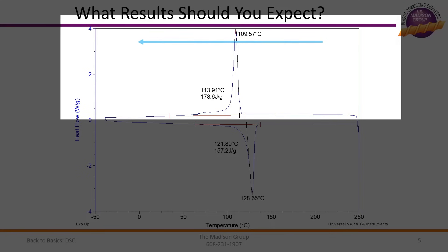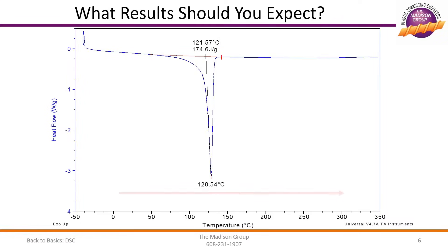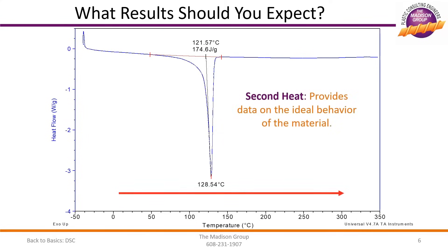The controlled cooling provides important data on how the material re-solidifies and also erases the thermal history of the material and allows the molecules to reach a near-optimal molecular orientation. The second heating curve, like the first, is read from left to right and is typically graphed on its own. This cycle provides information on the ideal behavior of the material when subjected to heat. For this reason, the second heating of the material is better for material identification and comparison purposes.